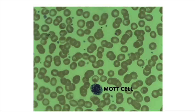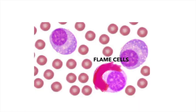Mott cells are plasma cells containing immunoglobulin inclusions — or you can say that numerous Russell bodies within a plasma cell form a Mott cell. It is important to note that all three — Mott cells, Russell bodies, and Dutcher bodies — are not specifically seen in multiple myeloma. They can be seen in any condition with increased plasma cells, such as infections, filariasis, autoimmune disease, or connective tissue disorders.